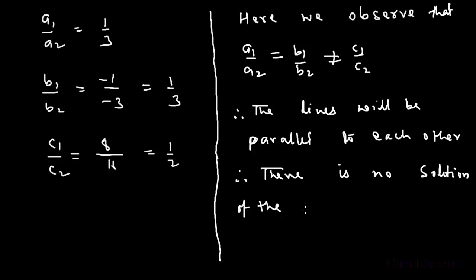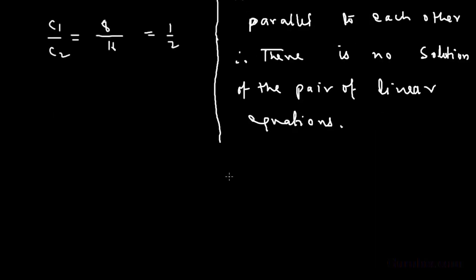This means the pair of linear equations is inconsistent, so we do not need to find the graphical solution. Thank you.